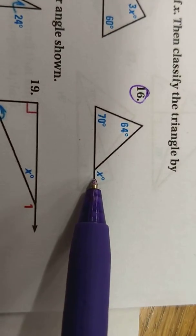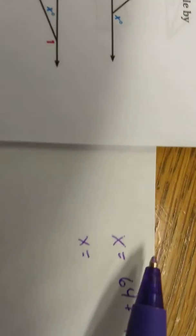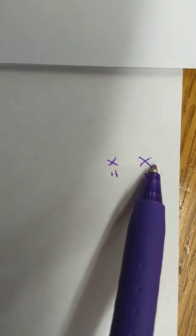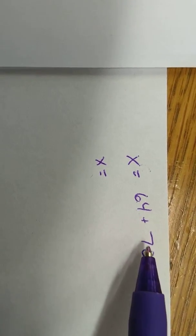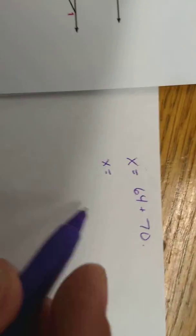So we could just say x has to be 64 plus 70. It looks something like this: x equals 64 plus 70, because that's my exterior angle and these are my two opposite interior angles. Therefore, that exterior angle has to be 134 degrees.